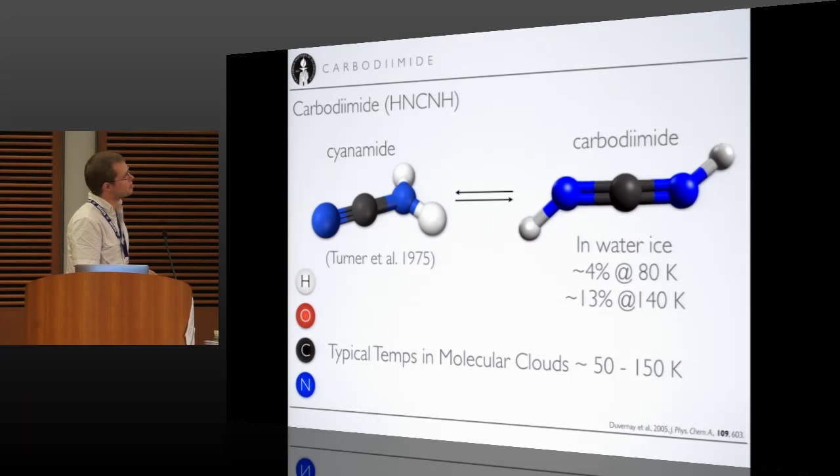But about 10 years ago, some folks said, well, if you put cyanamide in water ice, and as we heard from Brandon, water ice is the most predominant ice in the interstellar medium, you can actually get an enhancement of this carbodiimide, something like 4% or 13% of the cyanamide abundance. And all of a sudden, that's actually a detectable abundance using radio astronomy. So we went and took a look.